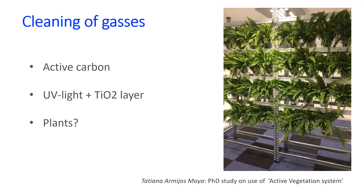However, for the removal of pollutants through the leaves of the plant, you need a lot of them. Therefore, studies are being performed with active systems where air is sucked actively through the medium in which the plants grow. In that medium, for example, bacteria or active carbon are added to remove pollutants from the air.